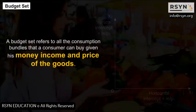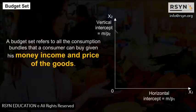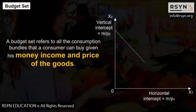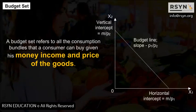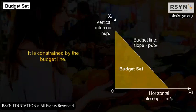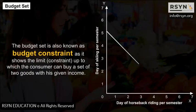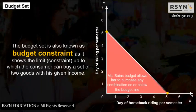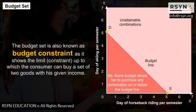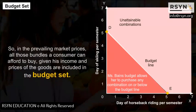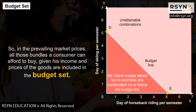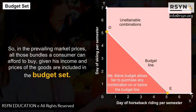A budget set refers to all the consumption bundles that a consumer can buy given his money income and the price of the goods. It is constrained by the budget line. The budget set is also known as the budget constraint as it shows the limit up to which the consumer can buy a set of two goods with his given income. All those bundles the consumer can afford at prevailing market prices are included in the budget set.